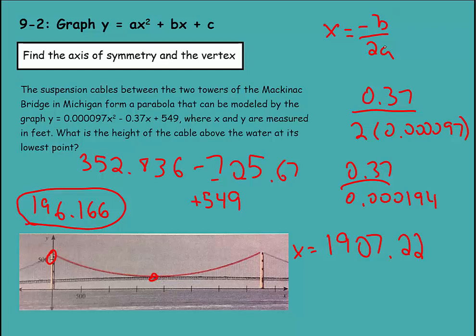Just to recap: we plugged the coefficients into the formula to find the x value of the vertex, then plugged that x value back into the equation to find y, which gave us the lowest point — the vertex — of the parabola.